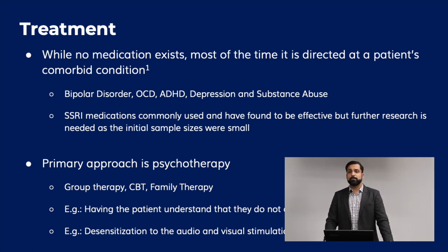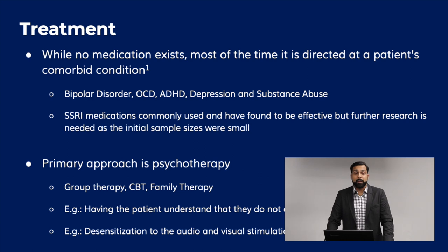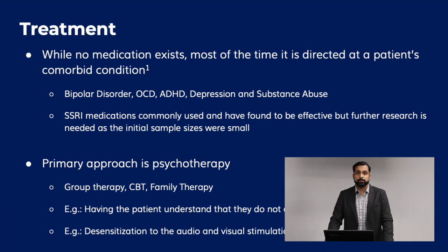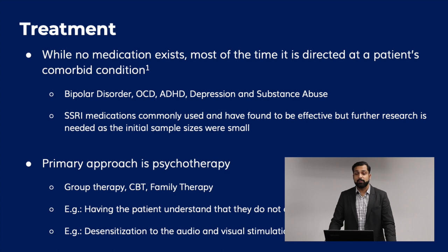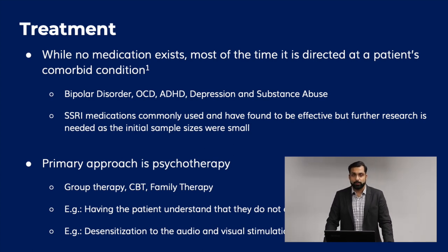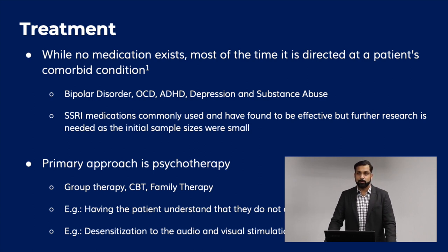Treatment: while no medication truly exists specifically for this condition, most treatment is directed at the comorbid conditions — bipolar disorder, OCD, ADHD, depression, and substance abuse, which can all go hand in hand with gambling disorder. SSRI medications such as Prozac and Sertraline are commonly used and found to be effective, but further research is needed as initial sample sizes were small. The primary approach for gambling disorder is psychotherapy — group therapy, cognitive behavioral therapy (CBT), and family therapy are all types that will help your patient.